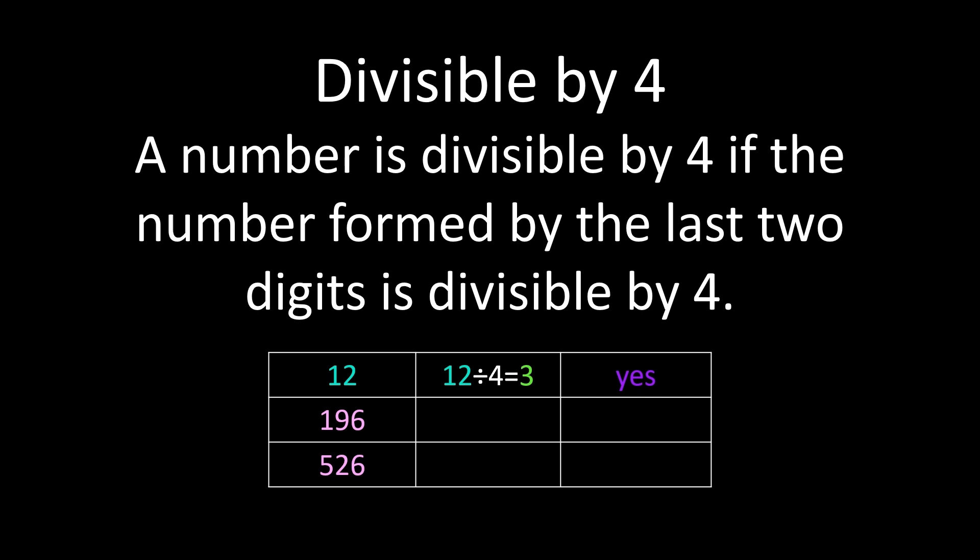For 196, we'll consider the last two digits, the 96. Is 96 divisible by 4? So 96 divided by 4 is 24, which means 196 is divisible by 4. Now remember, we're not saying that 196 divided by 4 is 24. We're just saying that you can use this rule to determine if 196 is divisible by 4.